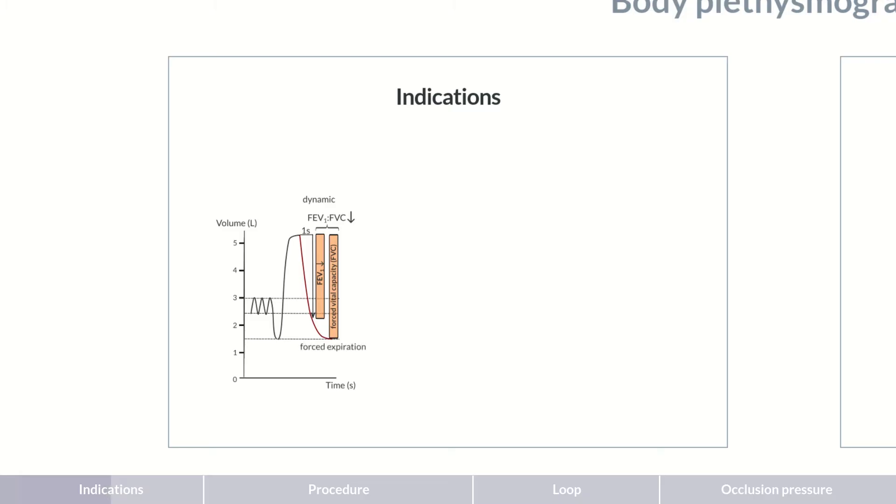Patients need to correctly perform the breathing maneuver required for measurement. In contrast, with body plethysmography, an obstruction can be determined by airway resistance, a parameter independent of patient cooperation.